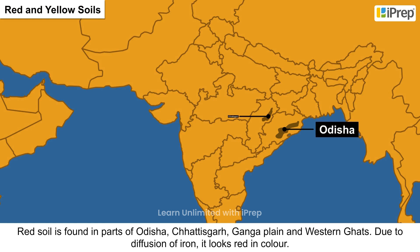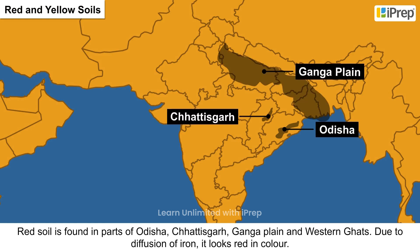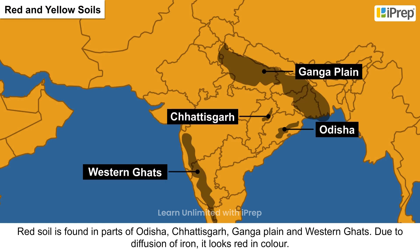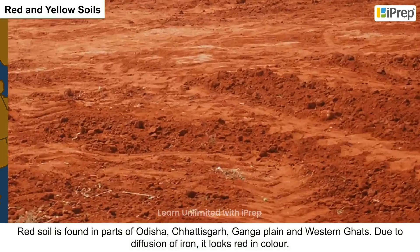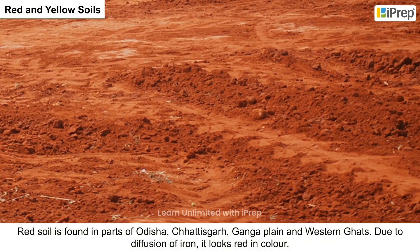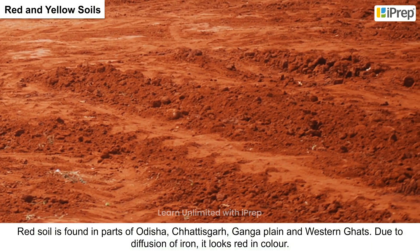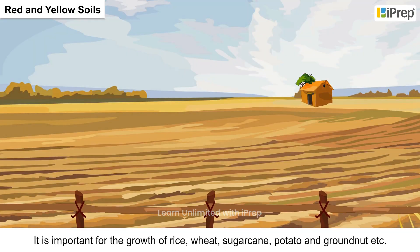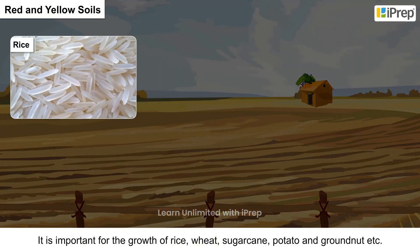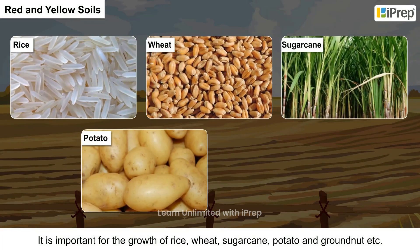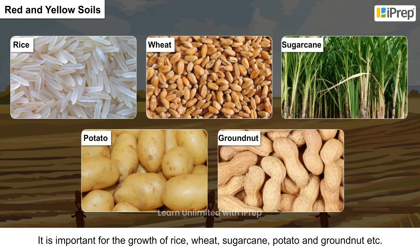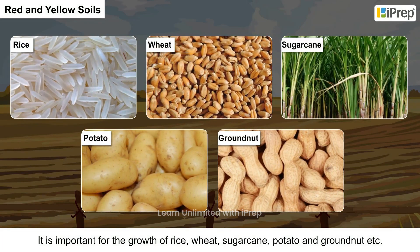Red and yellow soil is found in parts of Odisha, Chhattisgarh, the Ganga plain, and the Western Ghats. Due to the diffusion of iron, it looks red in color. It is important for the growth of rice, wheat, sugarcane, potato, and groundnut.